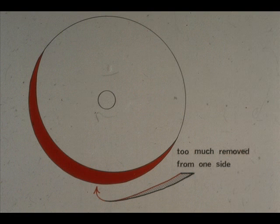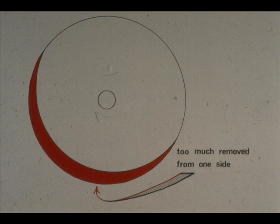Errors in machining of a rotating part can cause difficulty. For instance, a machinist may remove too much metal from one side of a part that is not true. This will leave one side heavier than the other.